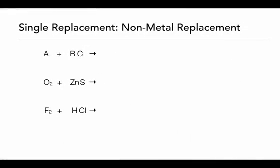The second type of single replacement reaction is nonmetal replacement — very similar. The only difference is that in this replacement reaction, a nonmetal will trade places with another nonmetal. In review, our overall reaction has A representing a nonmetal reacting with ionic compound BC. A will have a zero oxidation state, B is our cation with a positive charge, and C is our anion with a negative charge. This time, A and C will be trading places because C is the nonmetal. So C will be by itself and our product will be BA. C becomes a zero oxidation state, B keeps its positive charge, and A has gone from zero to form a negative anion.